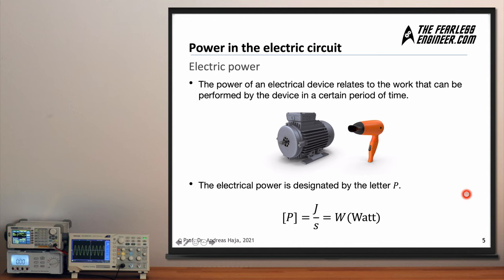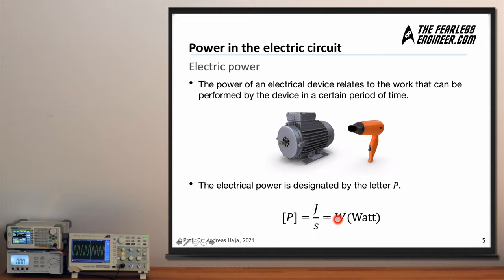Now let's look at electric power. We have two electrical devices here — a motor and a hair dryer. The power of an electrical device relates to the work that can be performed by the device in a certain period of time. Electrical power is also designated by the letter P. The unit of power is the watt, named after the famous English engineer James Watt. You can also express power as joules divided by seconds — energy per time — and both forms are used in electrical engineering.